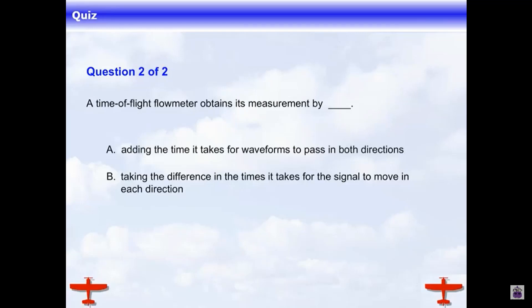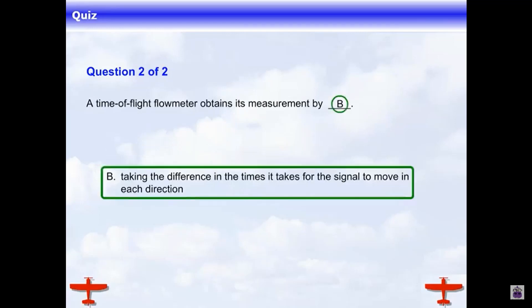A time-of-flight flow meter obtains its measurements by taking the difference in the time it takes for the signal to move in each direction.